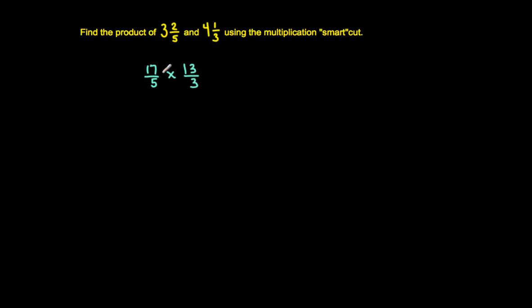So by looking at this now, I can multiply fractions by multiplying the numerators and then by multiplying the denominators. So this would be 17 times 13 over 5 times 3.